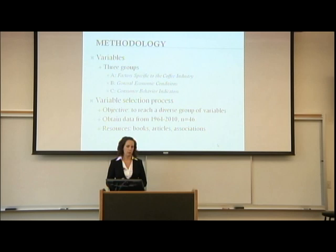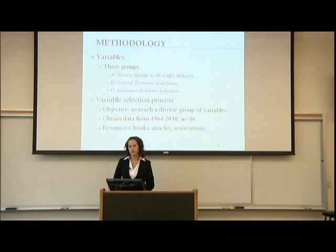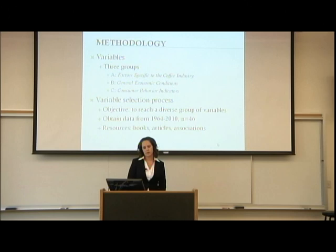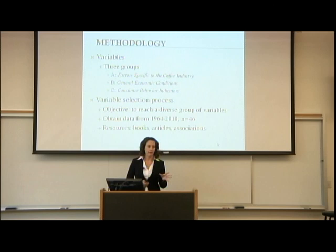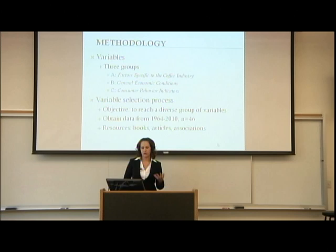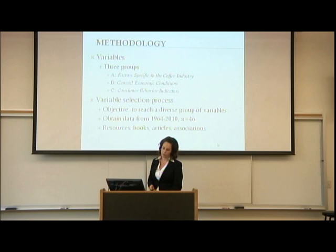The first step in my methodology was to choose my variables. To organize this, I divided them into three groups: first, factors specific to the coffee industry; second, general economic conditions; and third, consumer behavior indicators. Once those were established, I dove into an extensive selection process with the objective to reach a diverse group of variables. I needed to obtain data from 1964 to 2010, a sample size of 46 — no more or no less. I used resources such as books, articles, and associations on economics and coffee. My final variable sources were Haver Analytics, Yahoo Finance, the U.S. Census Bureau, and the Federal Reserve balance sheet.